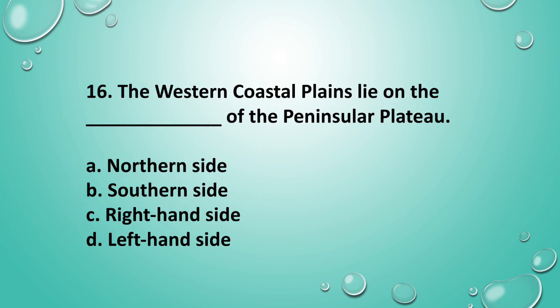Question 16: The western coastal plains lie on the ___ of the peninsular plateau. The answer is option D — left hand side.